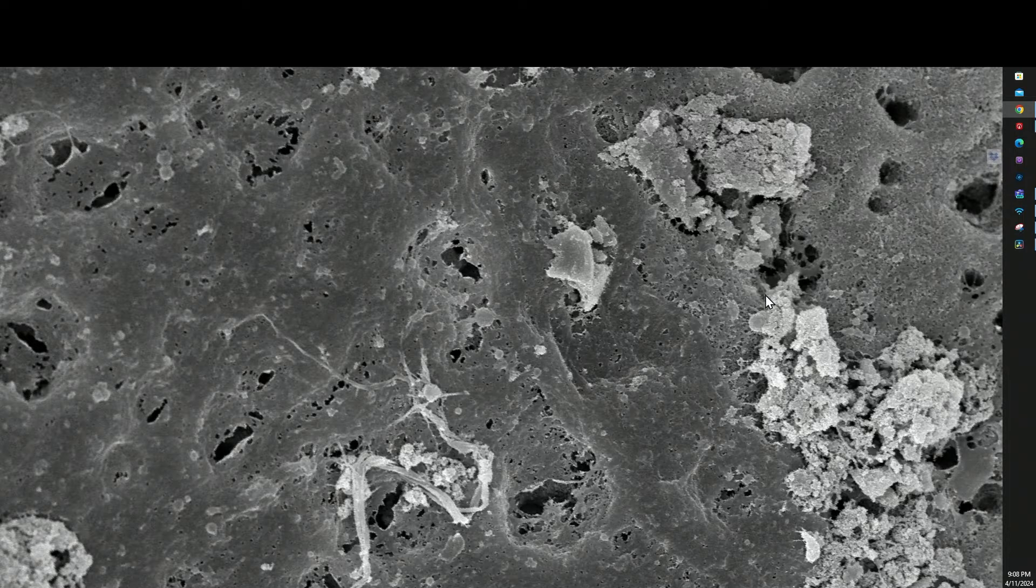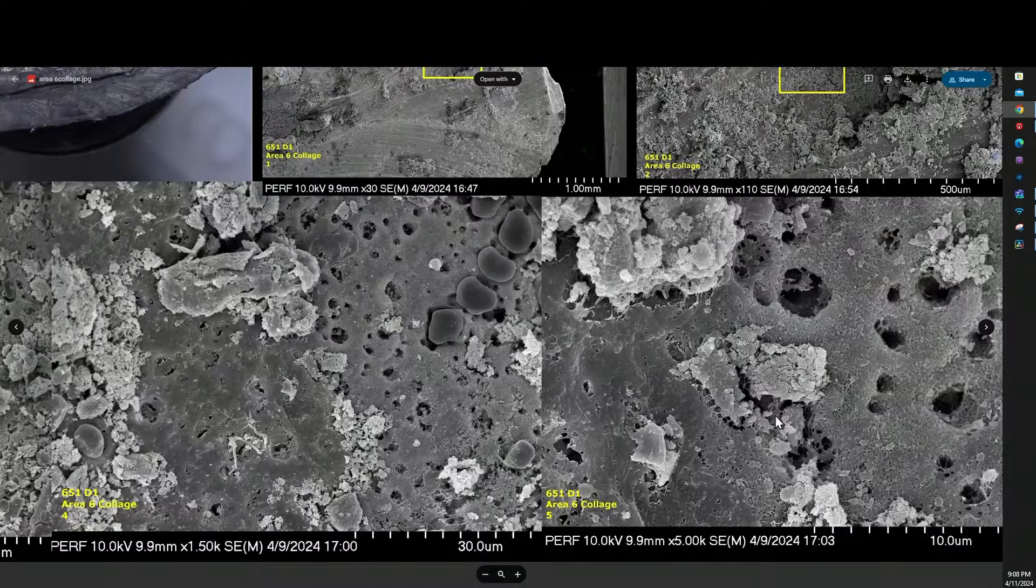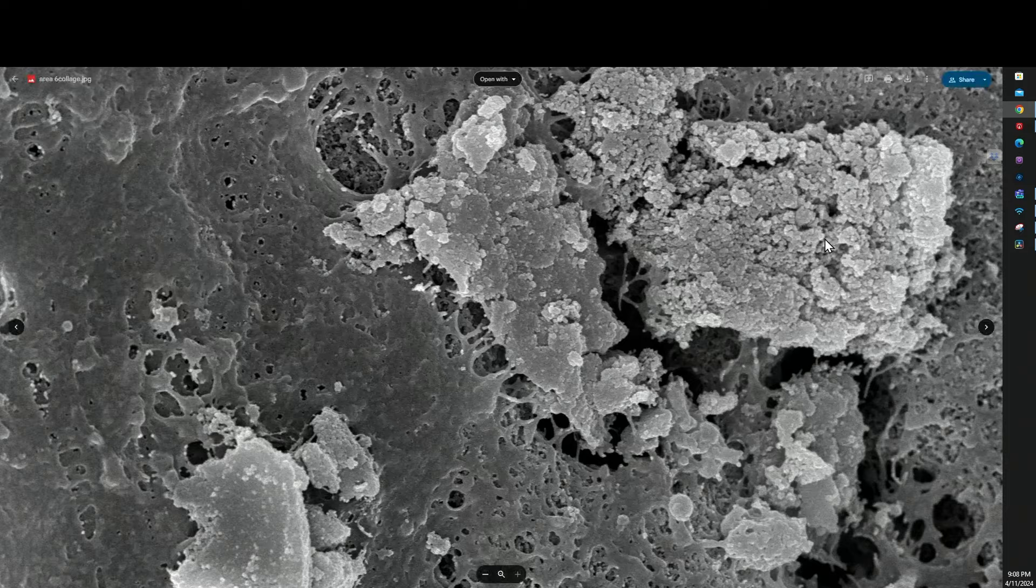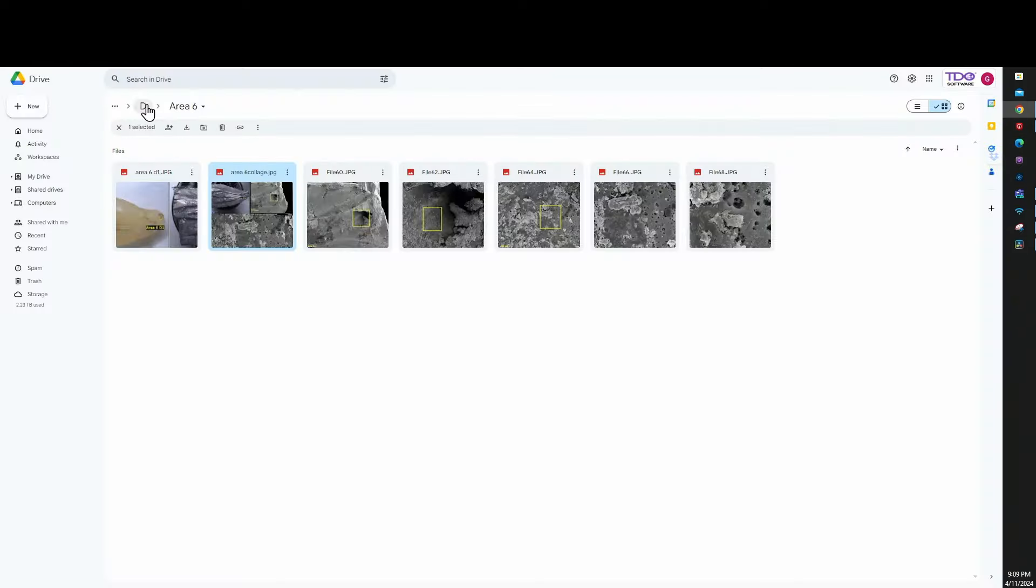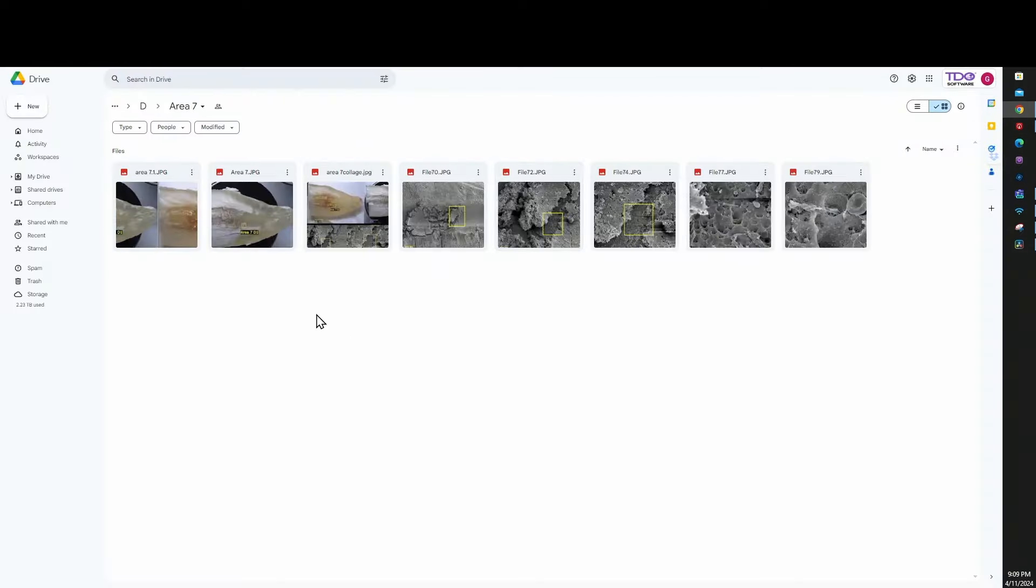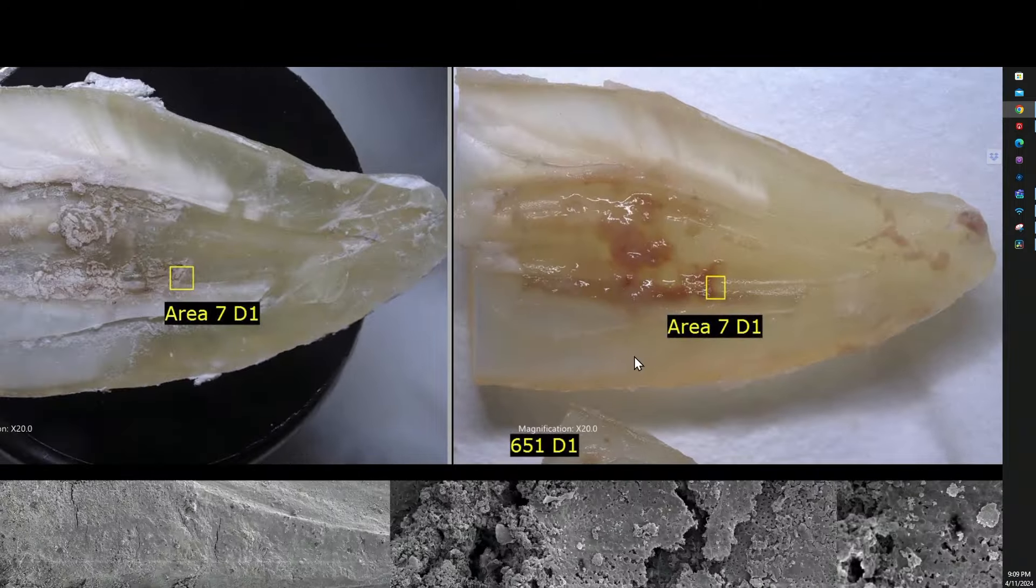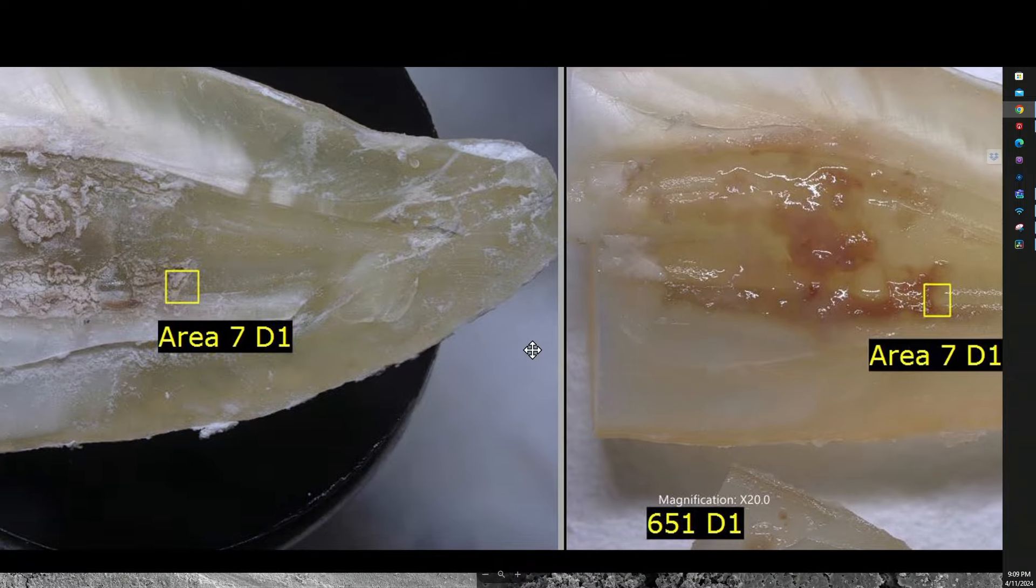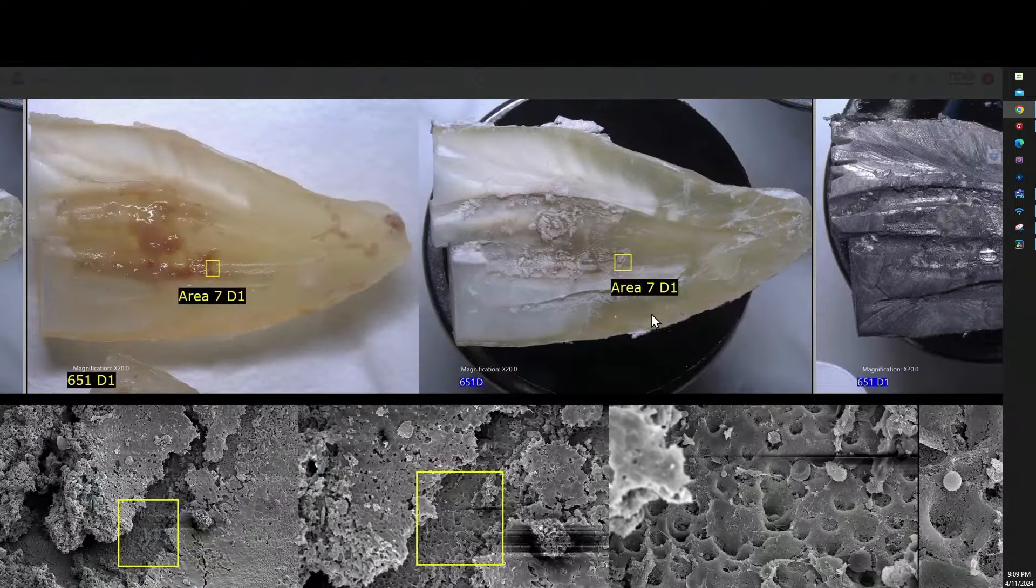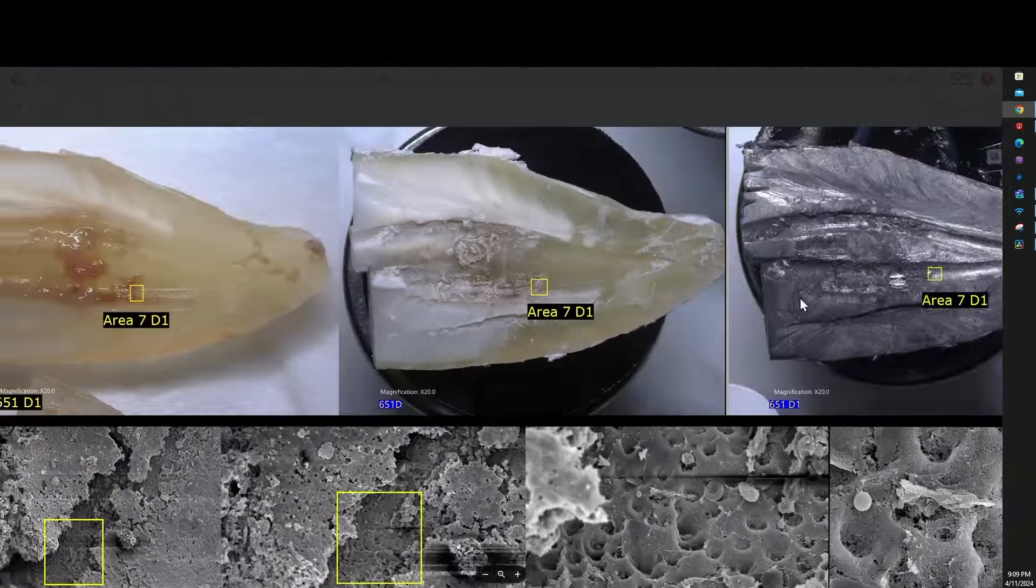You see areas where the pre-dentin has been pretty much removed and other areas where it hasn't been completely removed. And you'll see evidence of some dentinal tubules that have been fairly well demineralized. This is an area further up near where the soft tissue was.